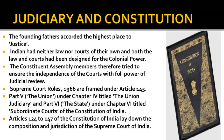Judiciary and the Constitution. India framed its own constitution. Among the noble aims and objectives of the constitution, the Founding Fathers accorded the highest place to justice. During the British period, Indians had neither laws nor courts of their own, and both the law and courts had been designed for the colonial power. The Constituent Assembly members therefore tried to ensure the independence of the courts with full power of judicial review. Supreme Court Rules 1966 are framed under Article 145 of the Constitution to regulate the practice and procedure of the Supreme Court. The Supreme Court of India is established by Part 5 (The Union), Chapter 4, titled 'The Union Judiciary,' and Part 6 (The State), Chapter 6, titled 'Subordinate Courts.' Articles 124–147 of the Constitution lay down the composition and jurisdiction of the Supreme Court of India.